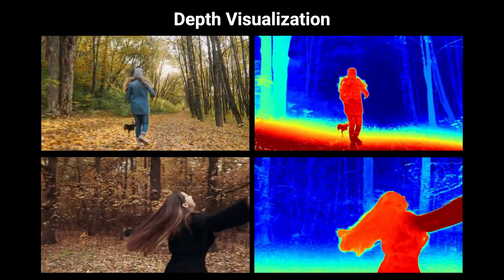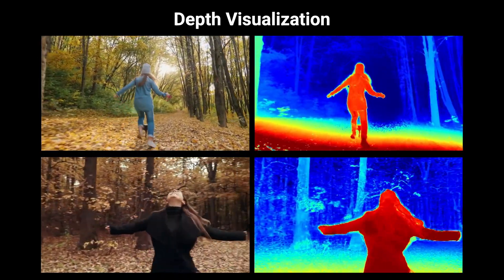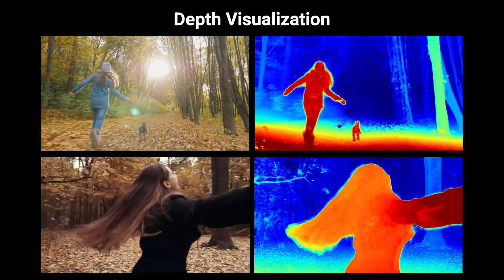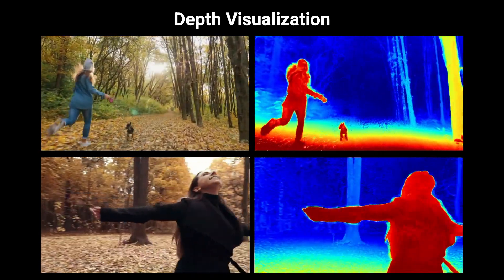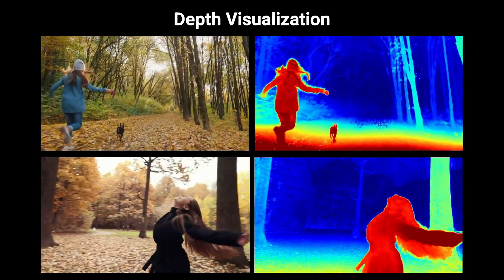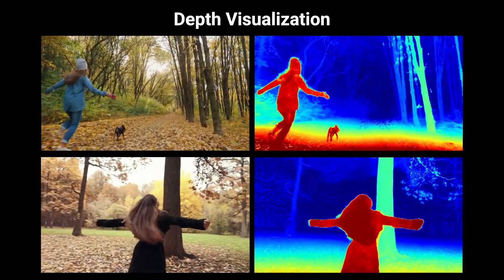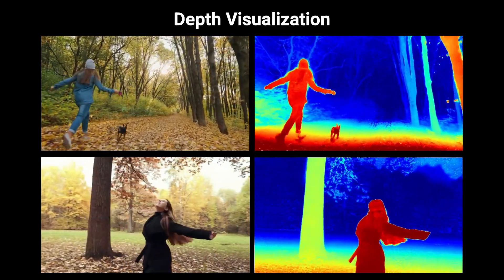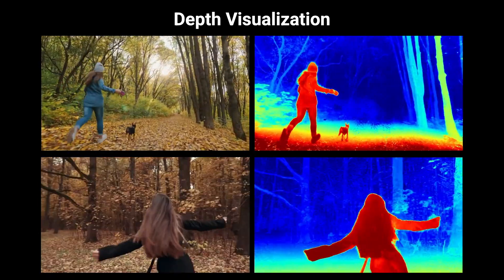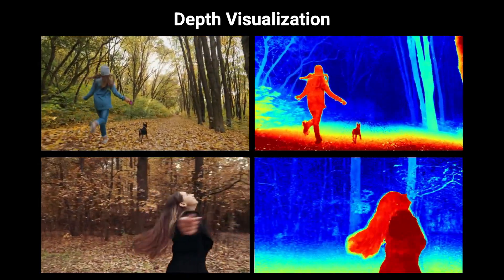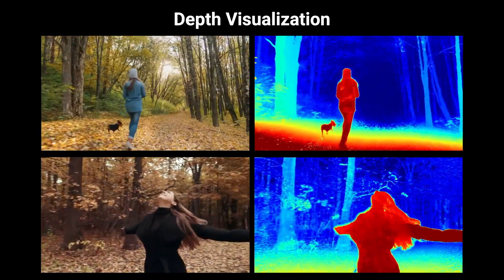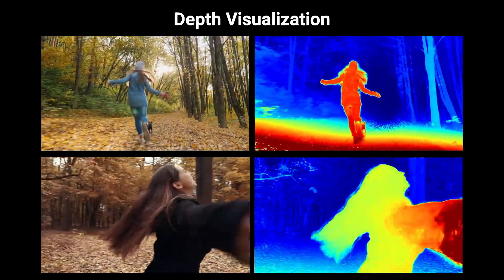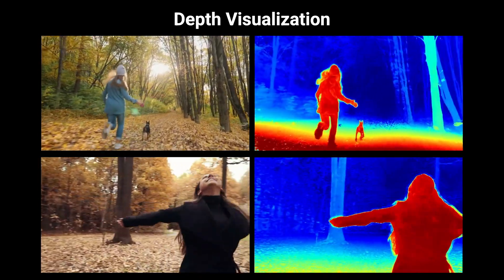We can visualise our estimated geometry by showing the expected depth along each ray. The resulting depth is consistent over time and captures detail in fine structures, such as the foliage in the background and the hair on the foreground subject in this example.